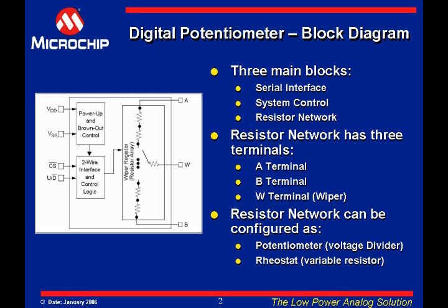Depending on how the device is packaged, not all the terminals may be available to the outside world. In a rheostat configuration, only the wiper and one of the terminals — either terminal A or terminal B — need be available. While in a potentiometer configuration, terminal A or terminal B could be tied to one of the power rails, either VDD or VSS.